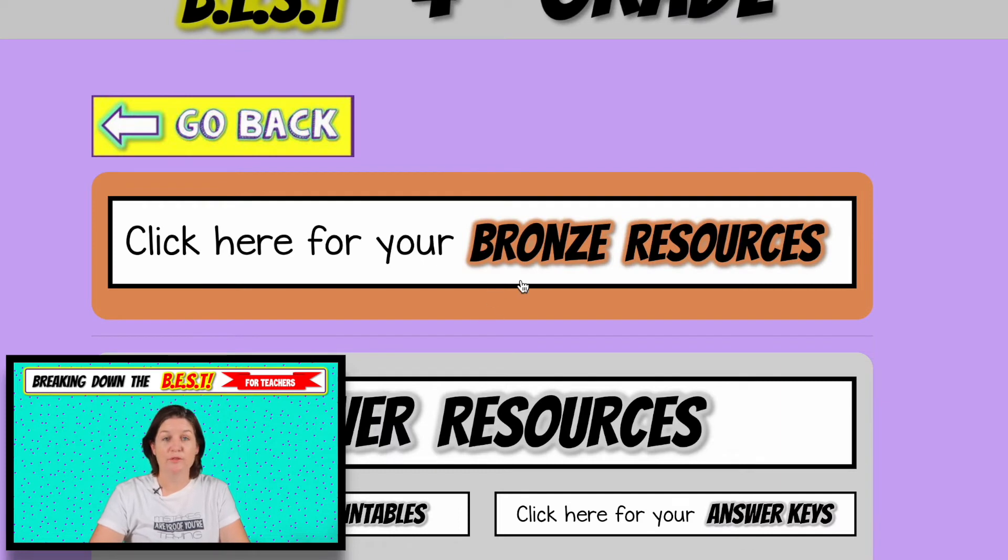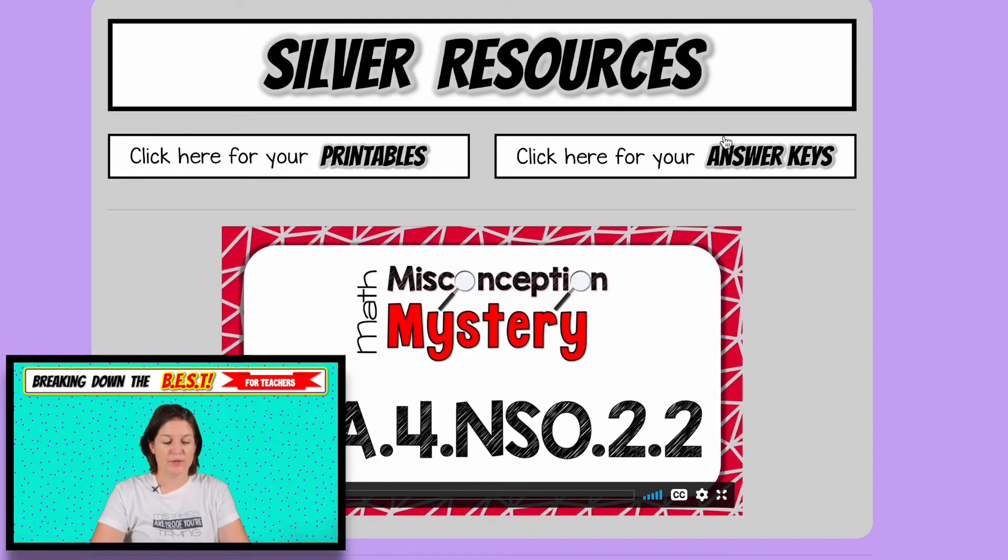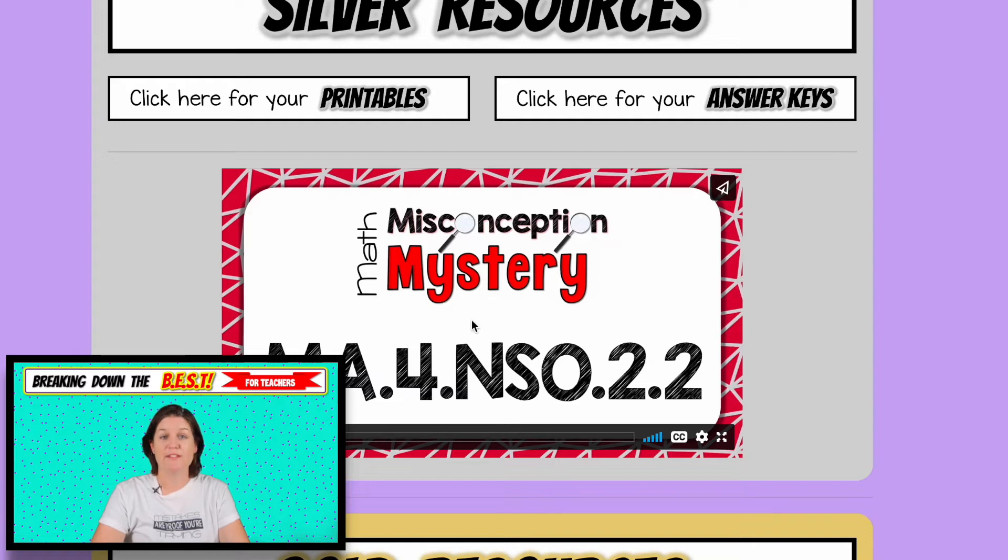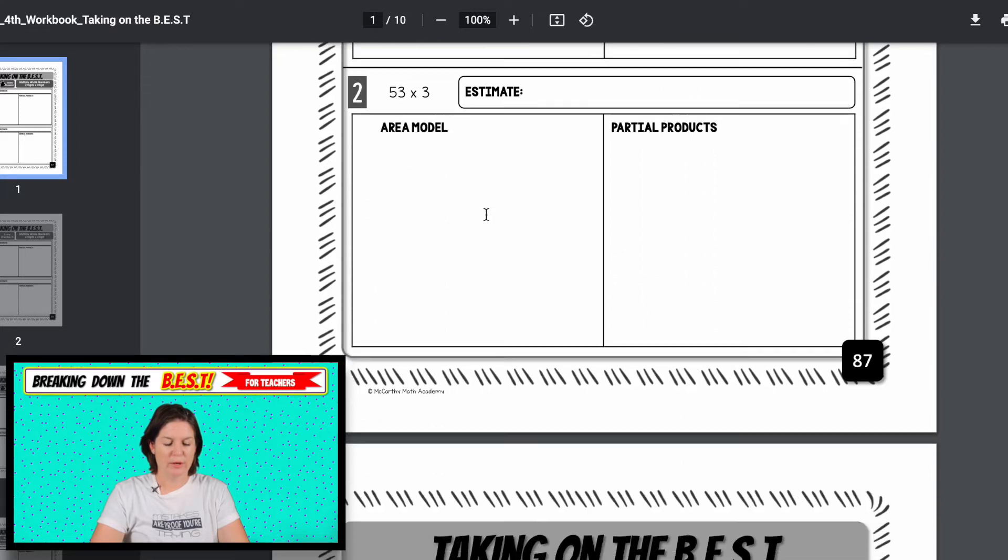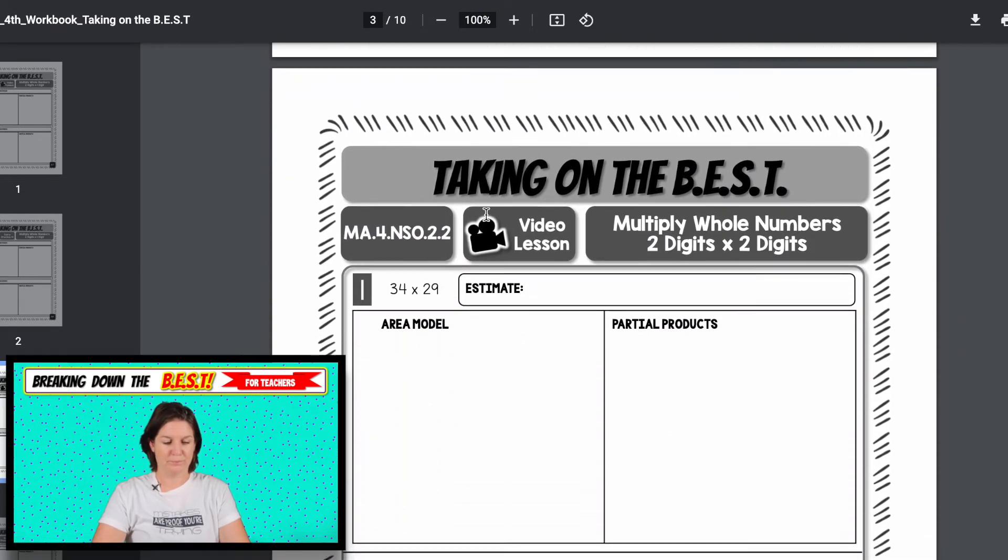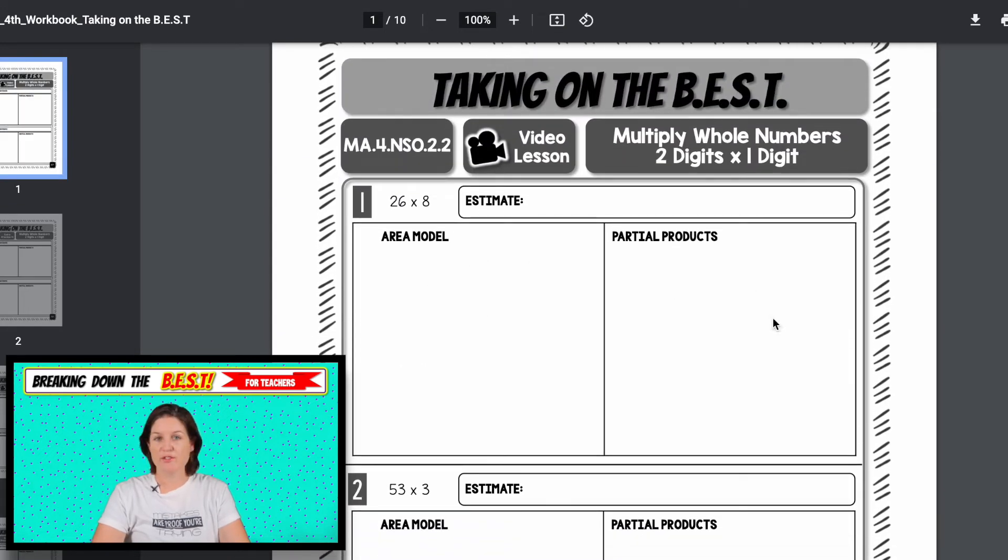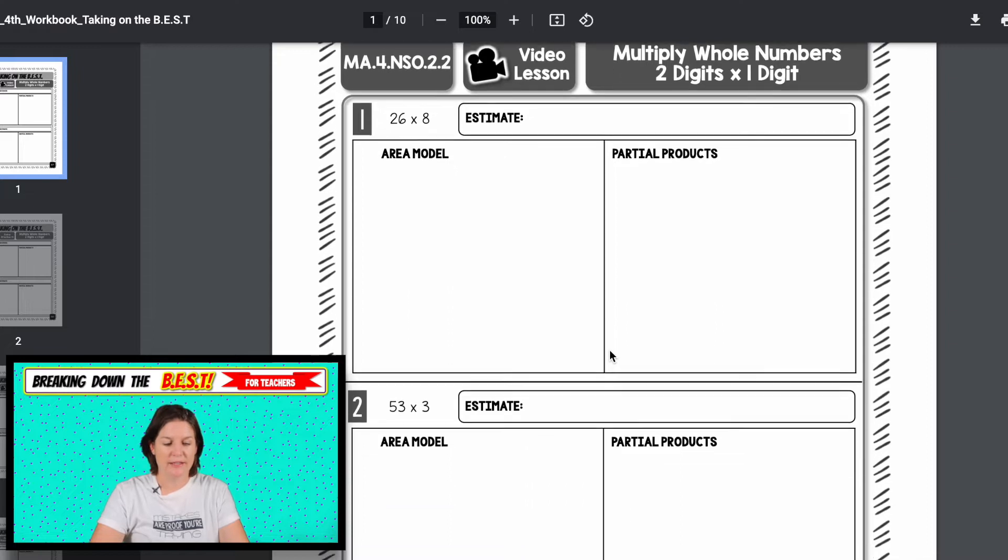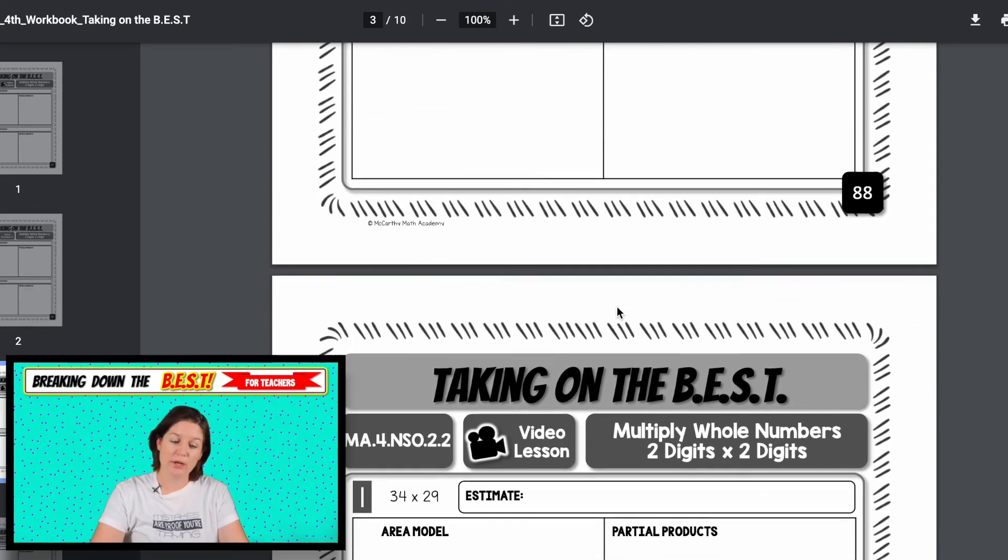If you have the silver plan, the silver membership, you do have access to the bronze resources, plus you have some extra stuff. You have printables, answer keys, and the math misconception mystery video for this particular standard. So let's look at what printables you have. So video lesson with the area model and partial products. And that is what we carry on throughout this one. So you can see, let me go back. So we're just kind of tackling these two strategies. If there's another strategy that you want to implement here, go for it. These are just the two that we're tackling in this and taking on the BEST. Here's an extra practice sheet. That's the difference between the bronze and the silver is you get some more practice. Here's the next video lesson sheet, extra practice video lesson with three digits times two digits, extra practice for that.